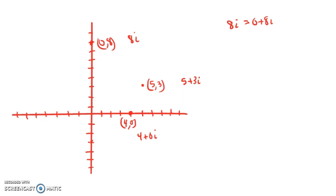For example, negative 3i would be down here, at (0, negative 3). Other points, like this one here, would be negative 4 plus i. So each point in the Cartesian coordinate system is an ordered pair, and we can think of that ordered pair as a complex number, and vice versa.